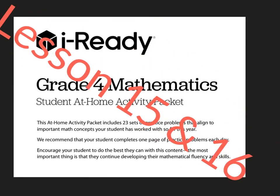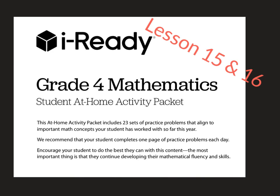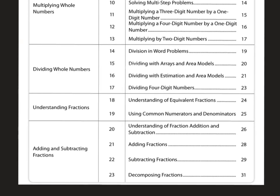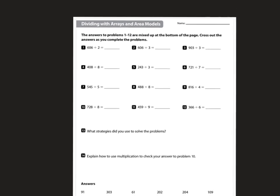Alright guys, today we're going to knock out two lessons — lesson 15 and lesson 16. Let's check out the table of contents. We are on dividing whole numbers. Today we're going to divide with arrays and area models, and then divide using estimation and area models. I'm going to use the pop-up method that we have on our videos that Miss Jay Walker and I made — I feel like that's the easiest way to go.